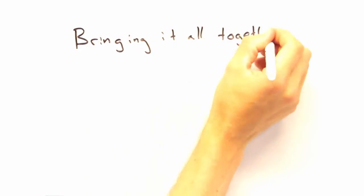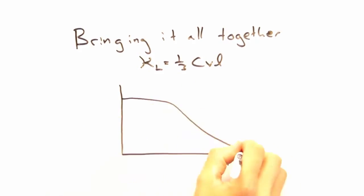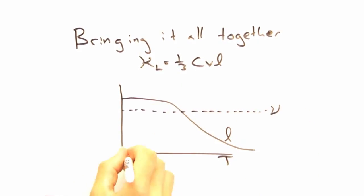So now that we have each piece, heat capacity, velocity, and mean free path, let's bring it all together into thermal conductivity as a function of temperature.